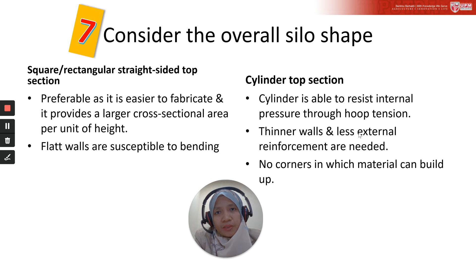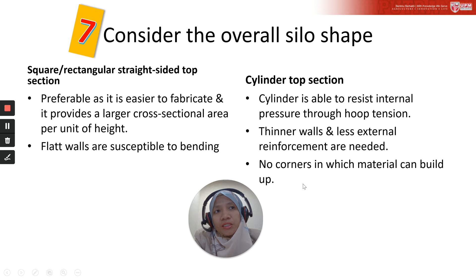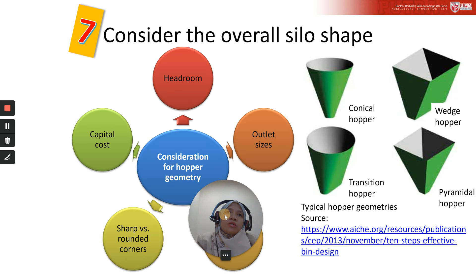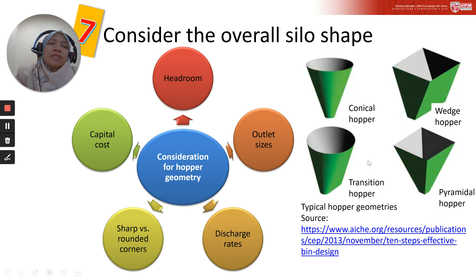For the cylindrical top section, there is no corner, so there is no powder build-up at corners, whereas a square section has corners. Hoppers can come in a general variety of geometries. This illustration shows four types of geometry commonly used, but there are also other shapes you can consider.